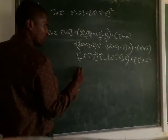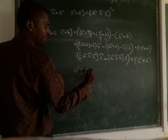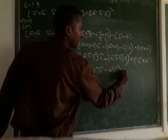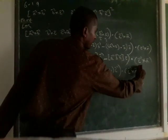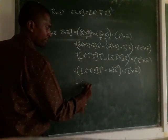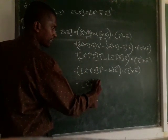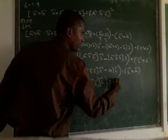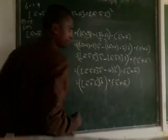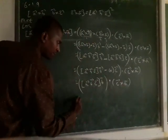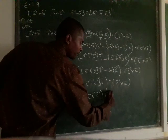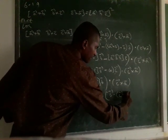Now, in box product, if any two vectors are repeated, the value becomes 0. So A vector, B vector, C vector — that entire value becomes 0 — into C vector dot C vector plus A vector. Now it becomes A vector, B vector, C vector into D vector. Now we multiply the third term: A vector, B vector, C vector, and we multiply B vector dot C vector plus A vector.